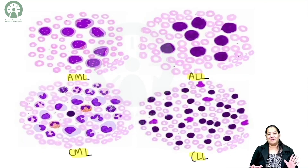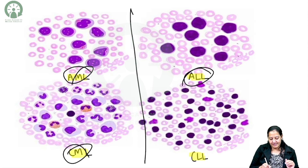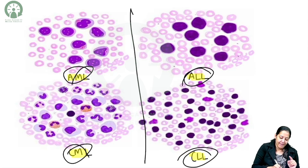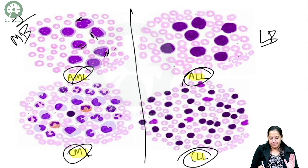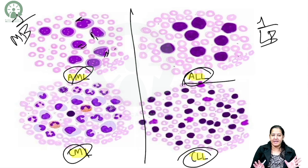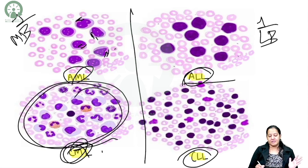Now let's compare the four leukemias. On the myeloid side we have AML and CML; on the lymphoid side we have ALL and CLL. In AML, there is only one type of cell — myeloblasts with Auer rods in their cytoplasm, giving a uniform appearance. In ALL, only lymphoblasts are present; they do not have Auer rods, have scanty cytoplasm and bigger nuclei. In CML, it is a garden party appearance — multiple cell types are present including promyelocytes, myelocytes, metamyelocytes, band forms, basophils, and eosinophils. In CLL, there are only two findings — small mature lymphocytes and smudge or basket cells.